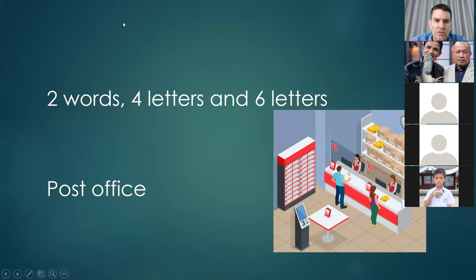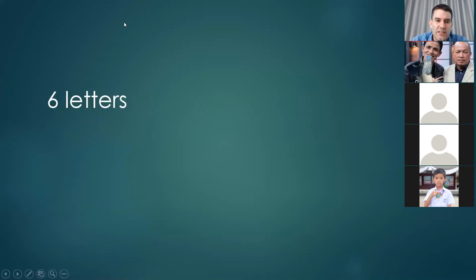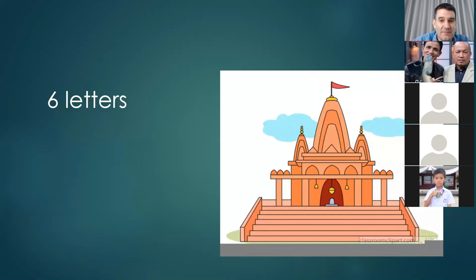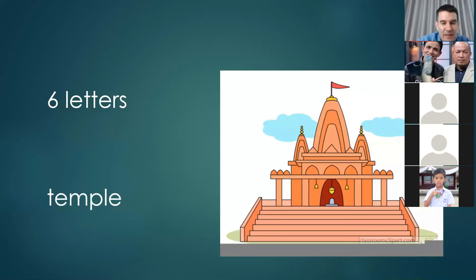Next one is six letters. It is where you go to pray, give food to monks, or just look at a beautiful building. Where do monks live? It starts with a T and has six letters — it is a temple, T-E-M-P-L-E.